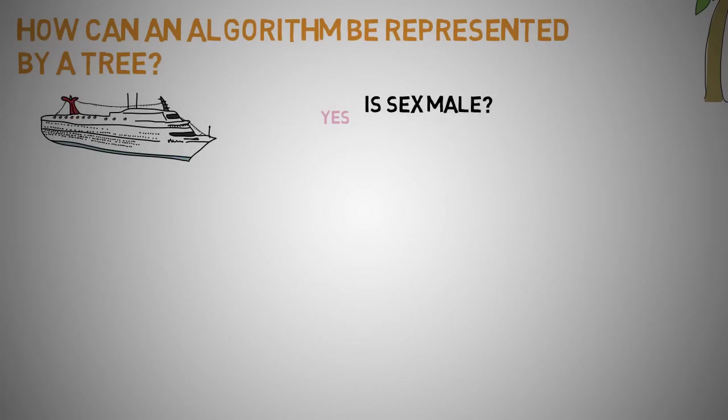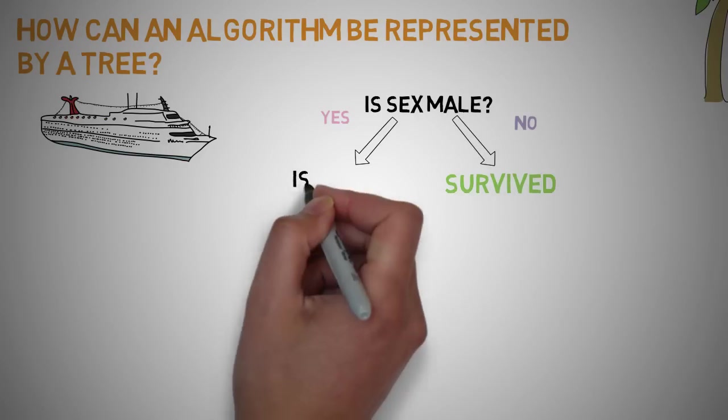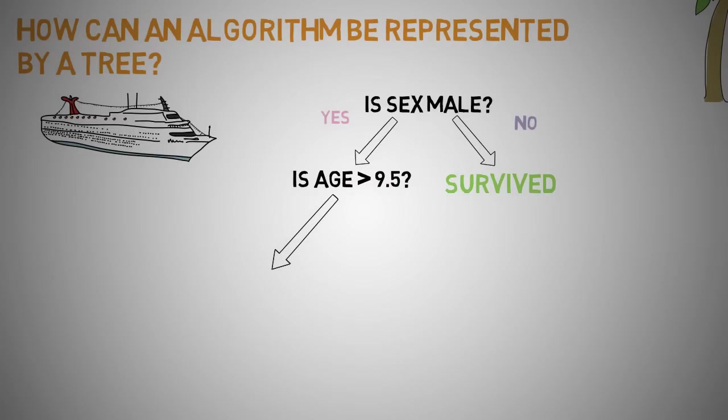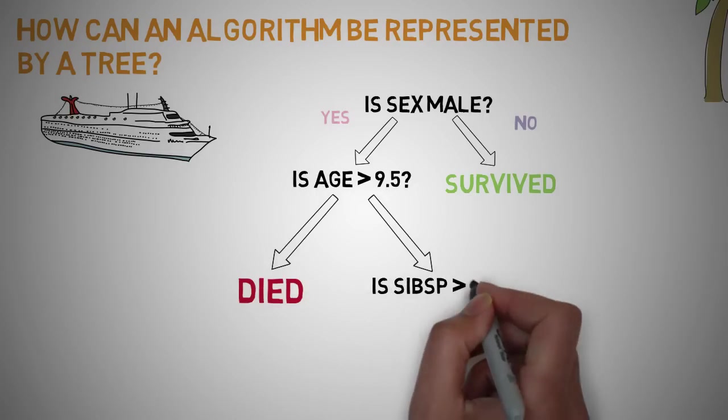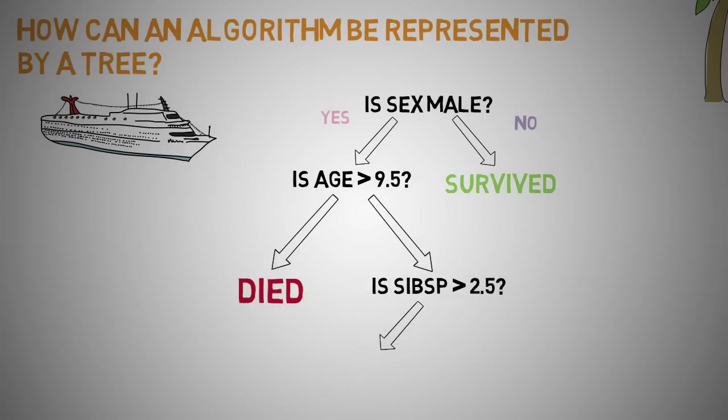This model uses three features from the dataset: namely sex, age, and number of spouses or children aboard, which we can abbreviate to sibsp. Whether a passenger died or survived is represented as red and green text respectively. Although a real dataset will have a lot more features and this will just be a branch in a much bigger tree, you can't ignore the simplicity of the algorithm.